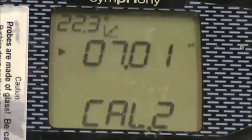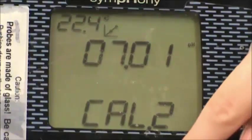Again, you will know the value has stabilized when the pH icon to the right of the reading stops flashing. Press the measure button to save the values for your two calibration points.